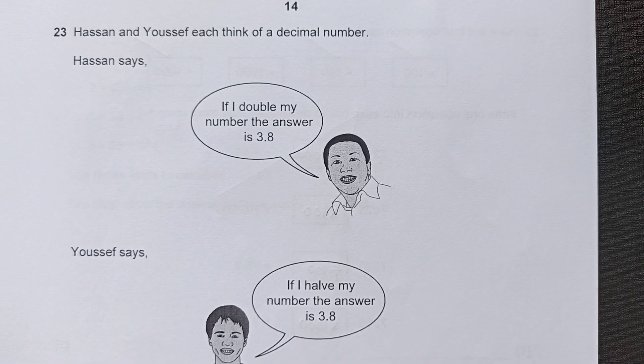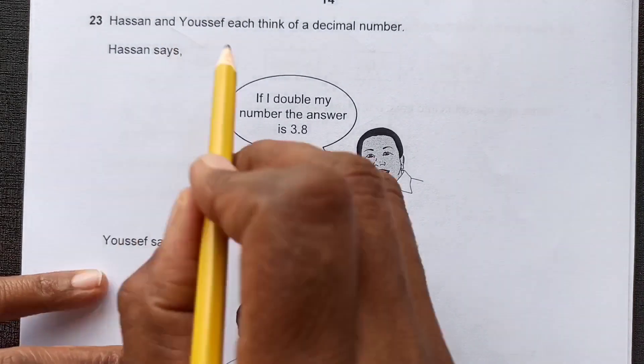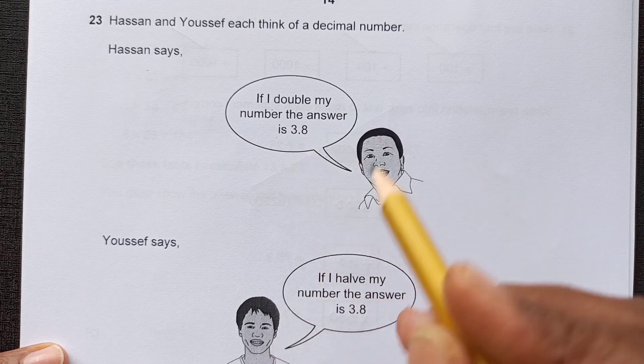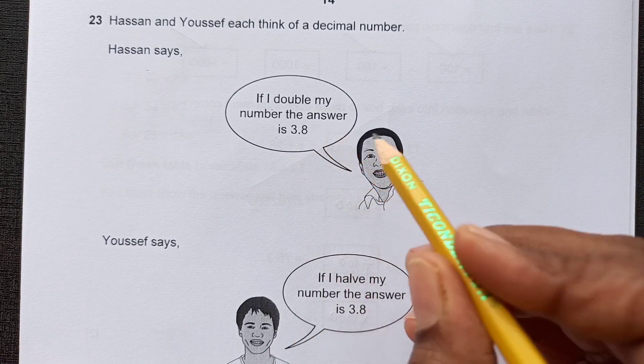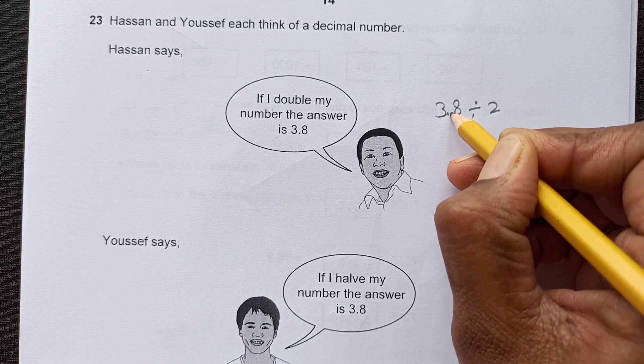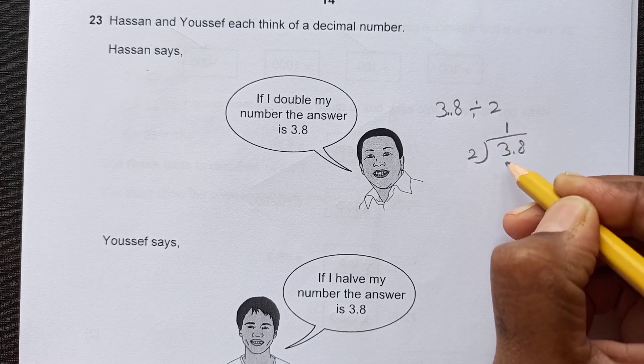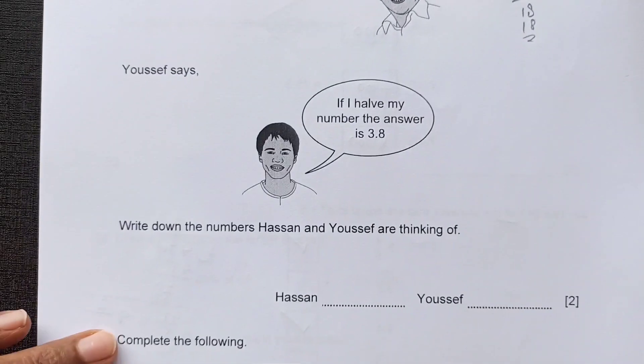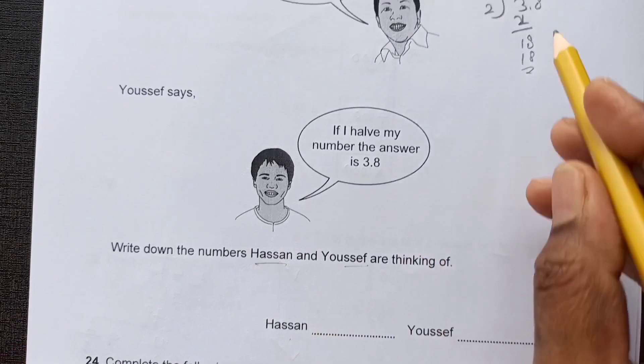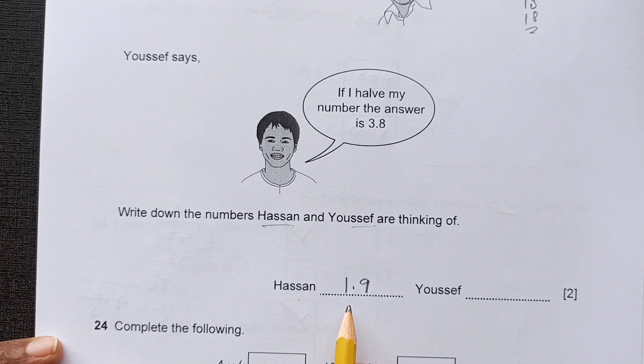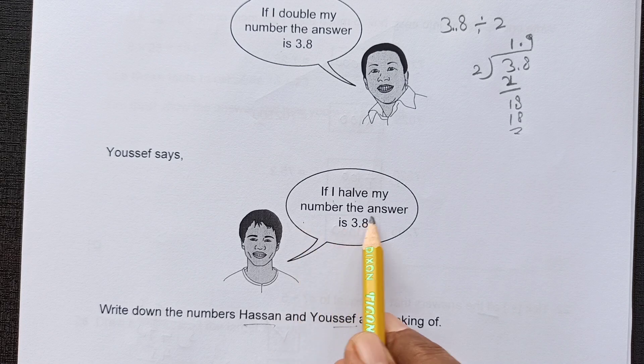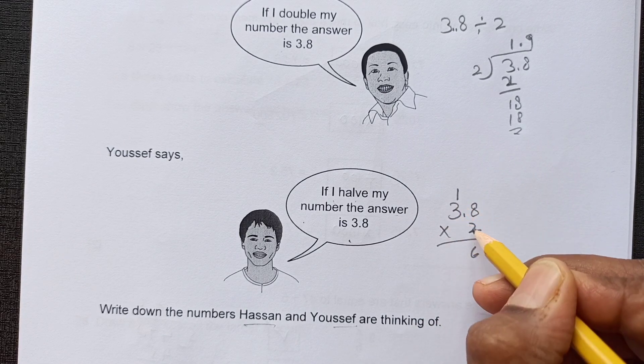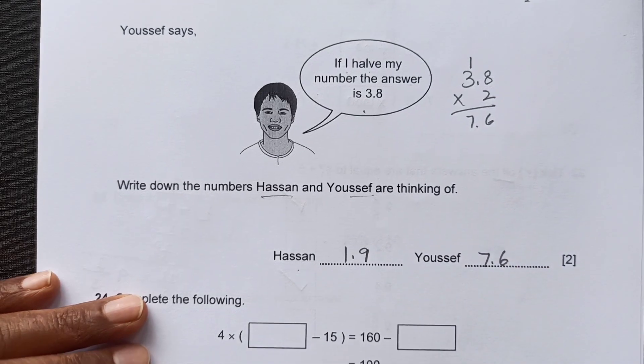Number 23. Hassan and Youssef each think of a decimal number. Hassan says if I double my number, the answer is 3.8. So that means this number is doubled. So that means we can divide. He is thinking about a number which is half of this. So 3.8 divided by 2: 1, 8, 1.9. The question was write down the numbers Hassan and Youssef are thinking of. Hassan is thinking of number 1.9. So 1.9 will go here. And Youssef, if I halve my number, the answer is 3.8. So that means this answer is half. So times 2. So 8 times 2 is 16, 3 times 2 is 6, plus 1 is 7, so 7.6. This is the final answer for this.